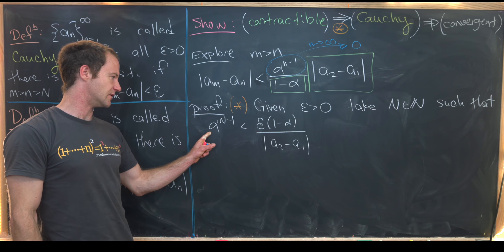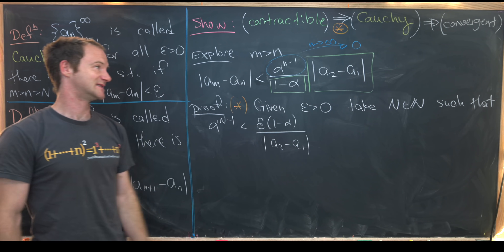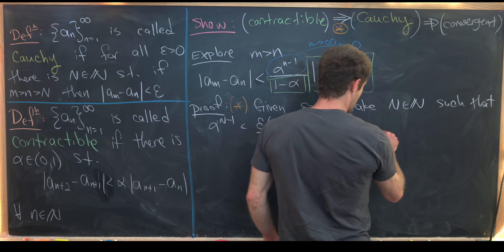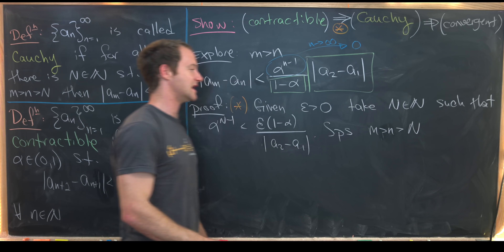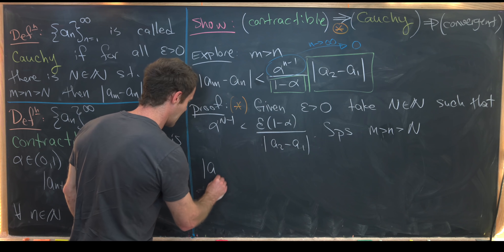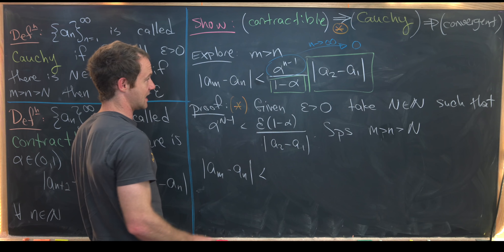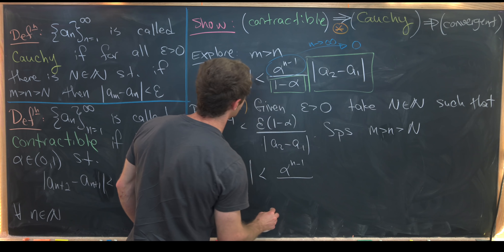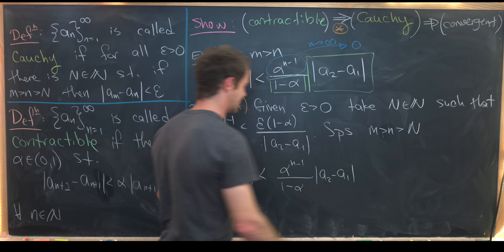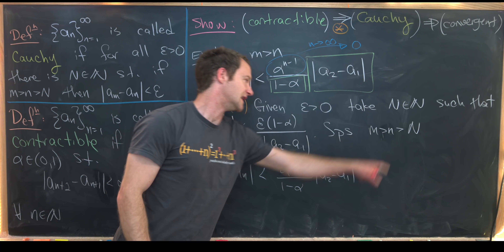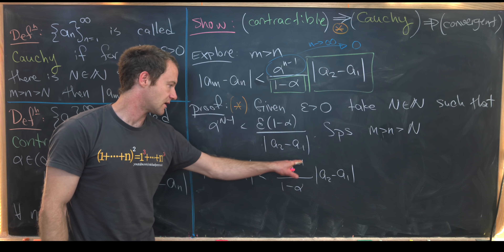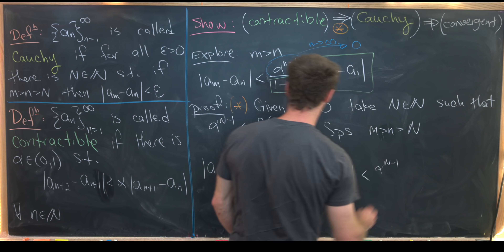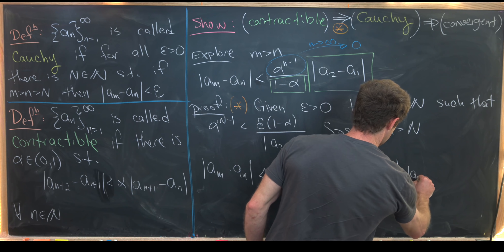We can choose such an N because alpha^{N-1} tends to zero. Now suppose m and n are both bigger than capital N with m greater than n. Then by our exploration, |a_m - a_n| < alpha^{n-1}/(1 - alpha) times |a_2 - a_1|. Since n is bigger than capital N, alpha^{n-1} < alpha^{N-1}, so |a_m - a_n| < alpha^{N-1}/(1 - alpha) times |a_2 - a_1|.